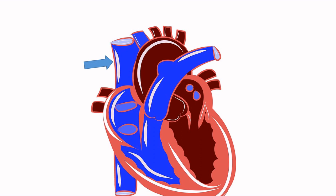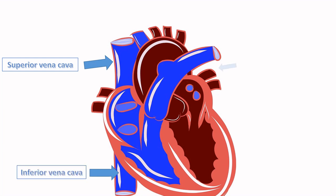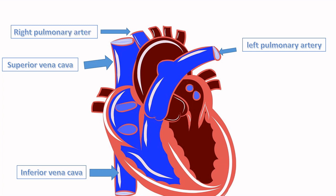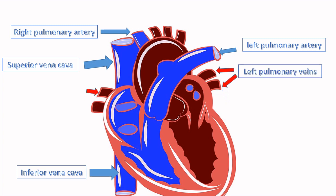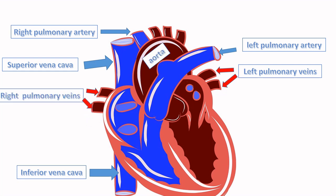Now we see the superior vena cava, then the inferior vena cava. Up there we see the left pulmonary artery and the right pulmonary artery. On the left side we see two left pulmonary veins, on the right side we see two right pulmonary veins, then we see the aorta.